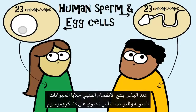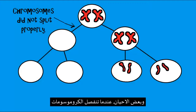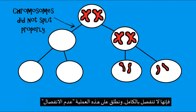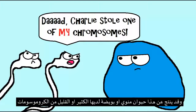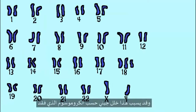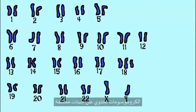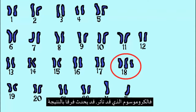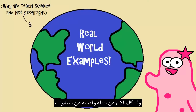Remember, in humans, meiosis produces sperm and egg cells that have 23 chromosomes. But sometimes those chromosomes, when they're separating, don't separate completely. We call this non-disjunction. This results in an egg or sperm that has too many or too few chromosomes, and that can cause a genetic disorder depending on which chromosome we're talking about, since different chromosomes contain different genes.